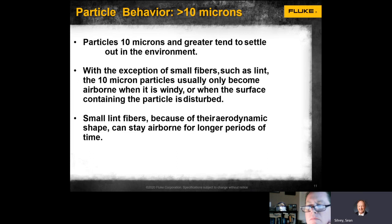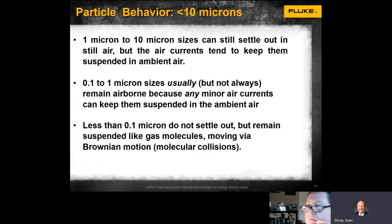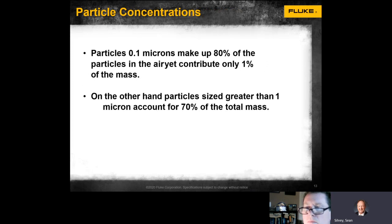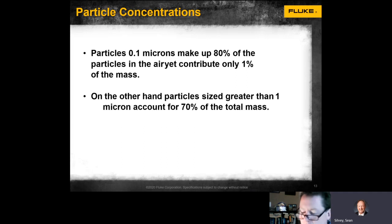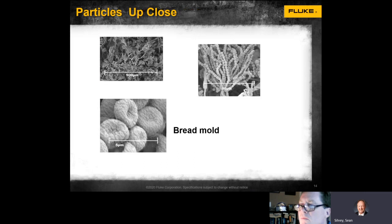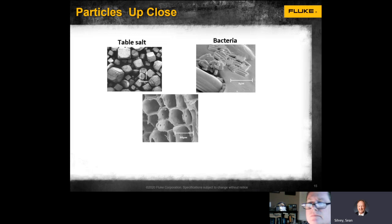Particles with less than 10 microns settle out in the air — they behave somewhat like gas molecules moving around. Notably, 0.1-micron particles make up about 80% of particulates but only contribute about 1% of the mass. The smaller the particles, the greater the accumulation, especially in a particle counter where larger ones will be fewer. Examples of particle sizes include bread mold, table salt, and bacteria.